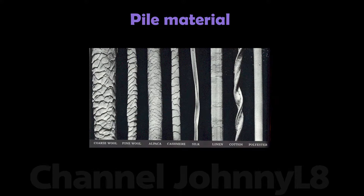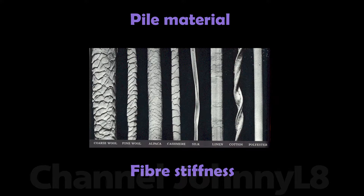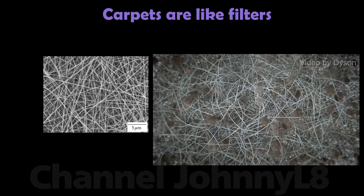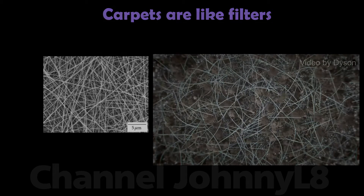The fibre material — the material the fibres are made from affects its stickiness to particles of different kinds — and the stiffness of fibres and larger structures, which affects how easily particles can be locked in. Carpet structure can be very complex at a microscopic level, and can act very much like a filter, trapping particles.